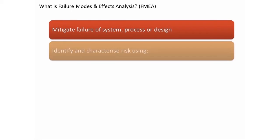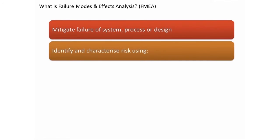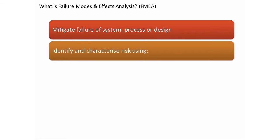FMEA is used to identify and characterize risk using the severity of the failure mode and its causes, the likelihood of the causes, the ability to detect causes and failure modes, and finally the measurement of error sources.